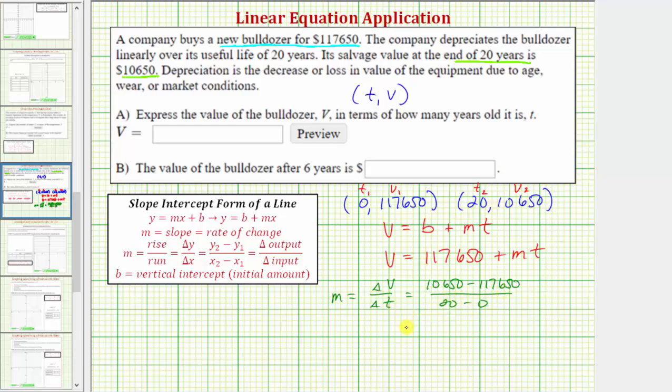So simplifying, 10,650 minus 117,650 is negative 107,000. And of course, 20 minus zero is 20.